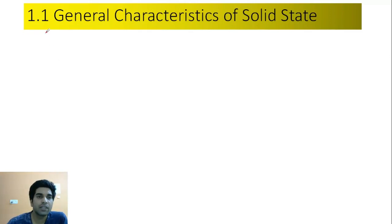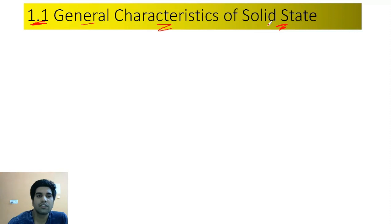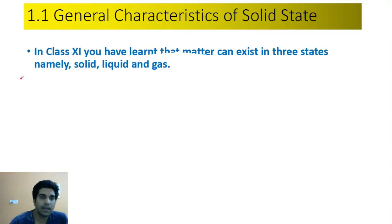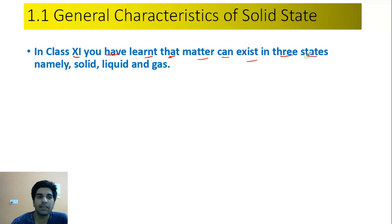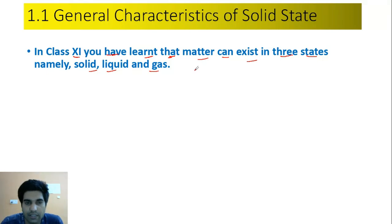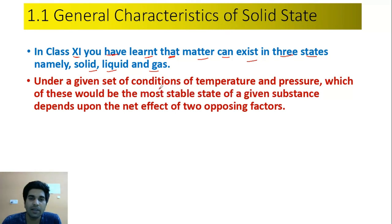Our first topic is 1.1 — General Characteristics of Solid State. In Class 11, you have learned that matter can exist in three states: solid, liquid, and gas. Under a given set of temperature and pressure, which of these would be the most stable state of a given substance depends upon the net effect of two opposing factors.